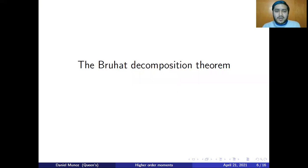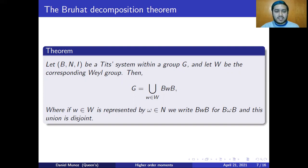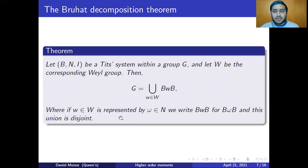Now that I have set up what it means to be a Tits system for a group G, I can talk about the Bruhat decomposition theorem in the more general form. The theorem says that if I take a triple B and I, a Tits system of a group G, and W the Weyl group, which is the quotient of N and T where T is the intersection of B and N, then G can be decomposed as a union of double cosets BWB, where W runs over all the elements in the Weyl group. If W in the Weyl group is represented by omega in N, then we write BWB for B omega B. The union is actually disjoint.